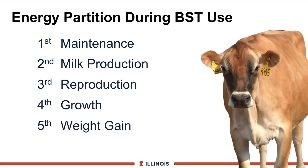Bovine somatotropin (BST) is another energy partitioning agent that changes the rules a bit — it encourages the cow to produce more milk. If you do not have enough energy in the ration, one of the lower-priority partitions has to give it up. A key concern with BST is having adequate nutrients to meet the extra 6, 8, or 10 pounds of milk the cow will produce.